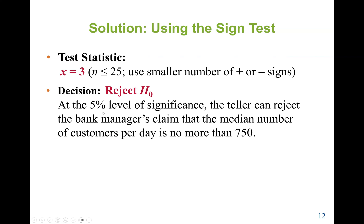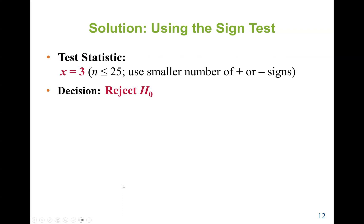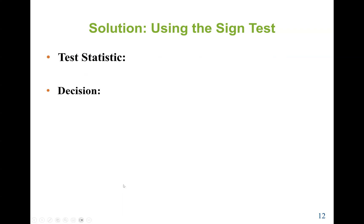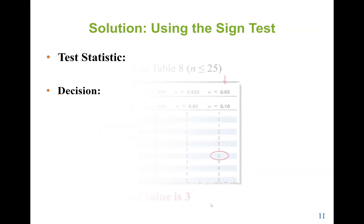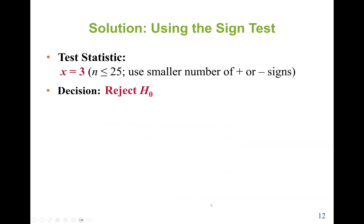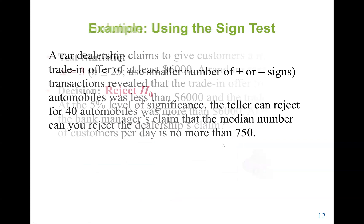At the 5% level of significance, the teller can reject the bank manager's claim that the median number of customers per day is no more than 750. The test statistic value is 3 and the critical value is also 3, so we reject H0.